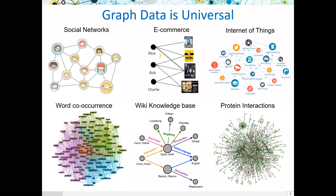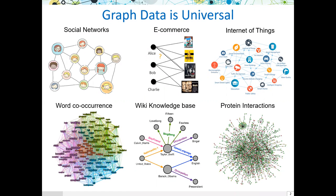Graph data is universal. For example, in social networks we can have a graph to model the friendship between users. In online e-commerce platforms, we can create a graph to model users' adoptions on different kinds of items. Also, in the Wikipedia knowledge base, we can create a multi-relational graph in which each node is an entity, and the edges depict different kinds of relations between entities.